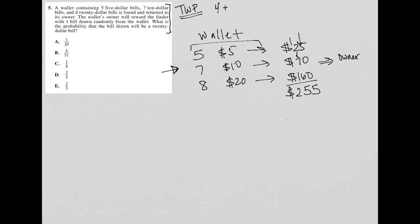So the next sentence says the wallet's owner will reward the finder with one bill drawn randomly from the wallet. OK, what is the probability that the bill drawn will be a twenty dollar bill? OK, so probability is a key word. Anytime you see it used on this test,